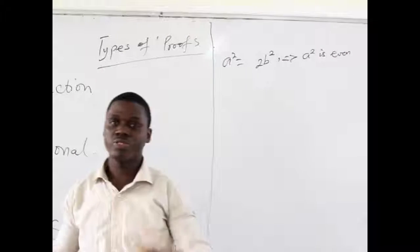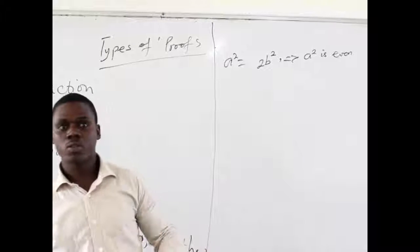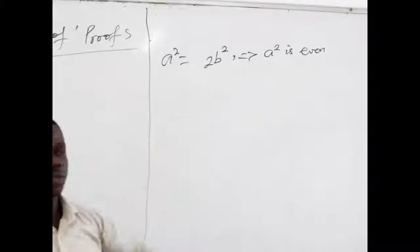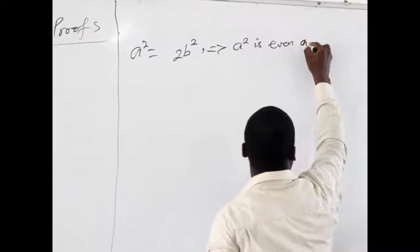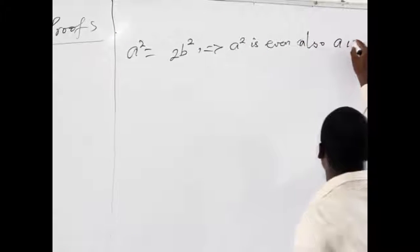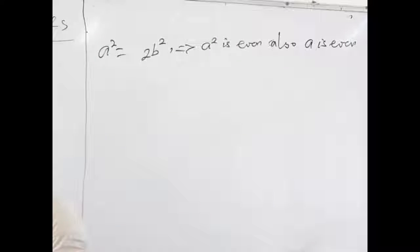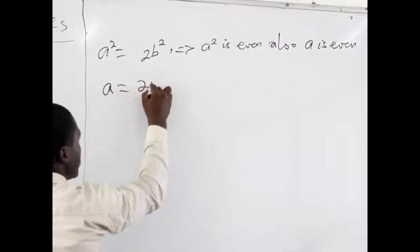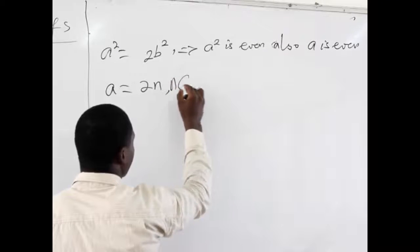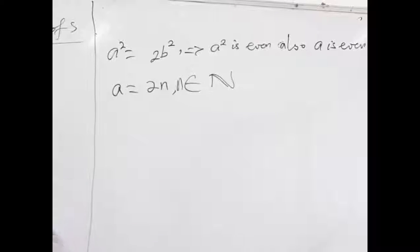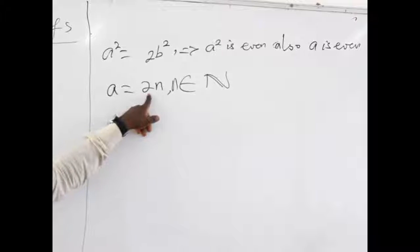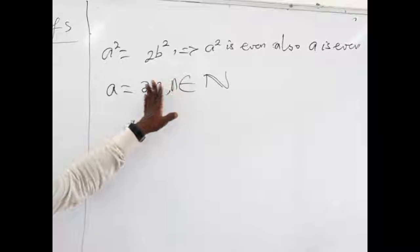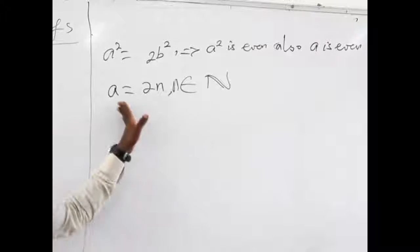Now, if A squared is even, it has been proven that even numbers always produce even squares. So it means that A squared is even, and from here we can also say that A is even. Now, if A is an even number, that means we can write A as 2N, where N belongs to the set of natural numbers. Putting 1, 2, 3, 4 here all produce even numbers. So we say that A can be written in this form.